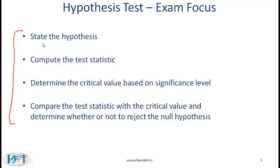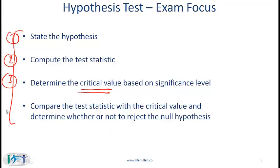To do hypothesis testing, we first state the hypothesis. We then compute something called the test statistic. Next, we determine a critical value which is based on the significance level, and finally we compare the test statistic with the critical value and determine whether or not to reject the null hypothesis. These are the steps most likely tested on your exam.